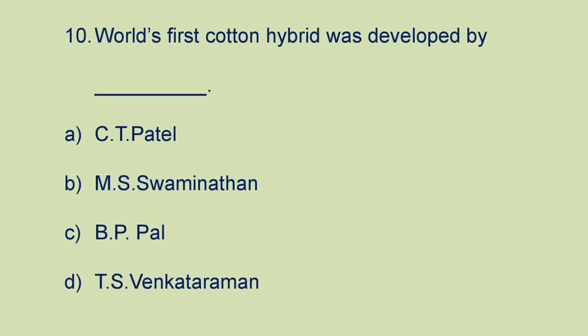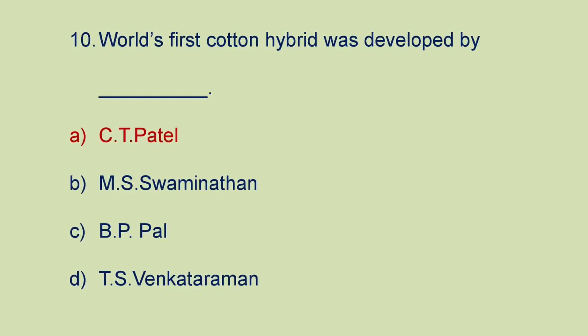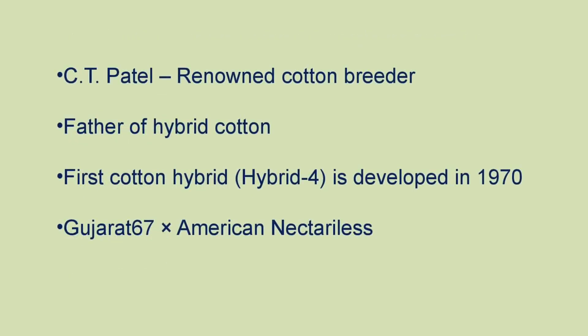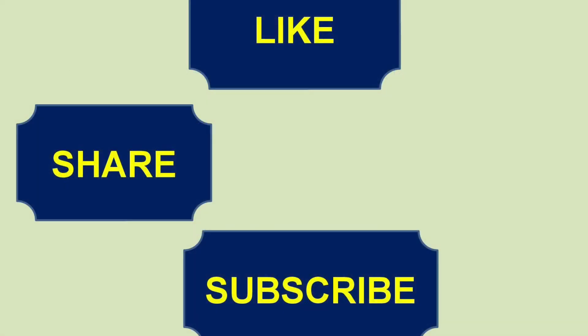Next question: the world's first cotton hybrid was developed by A) CT Patel, B) MS Swaminathan, C) BP Pal, or D) TS Venkatraman. The world's first cotton hybrid was developed by CT Patel. He is a renowned cotton breeder and is known as the father of hybrid cotton. He developed the first cotton hybrid, Hybrid 4, in 1970, by crossing Gujarat 67 with American Nectaryless.